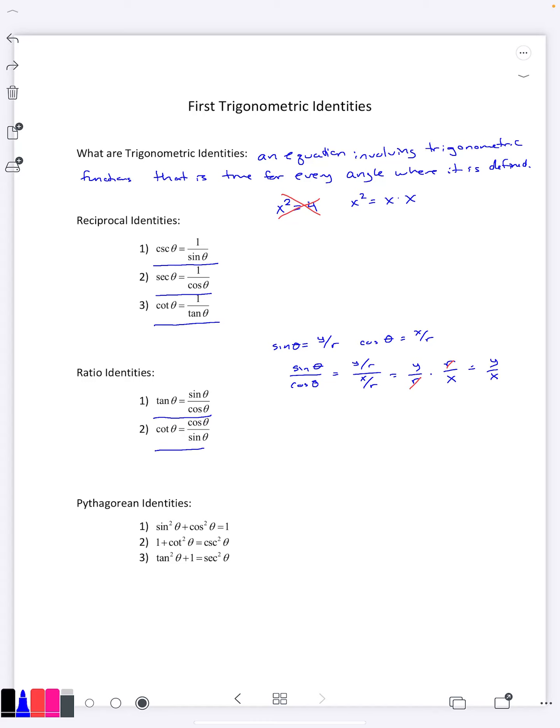This can be very useful when you want to switch back and forth. Some problems, you want to have everything in terms of sine and cosine. Some problems, it's better to put them in terms of tangent or cotangent. And so these ratio identities allow you to switch back and forth here.